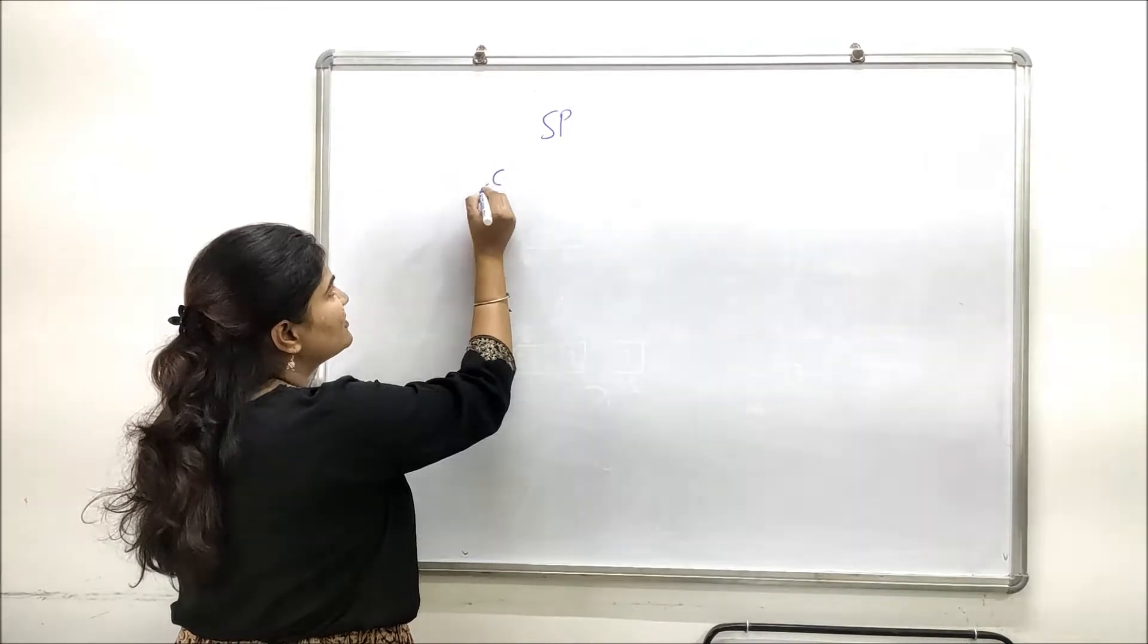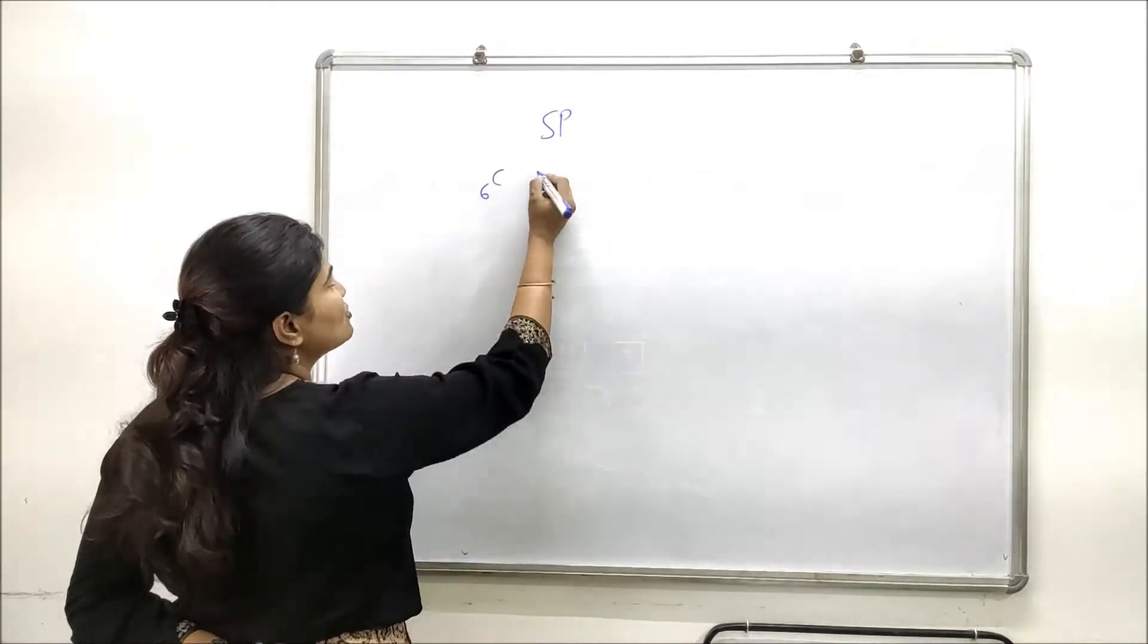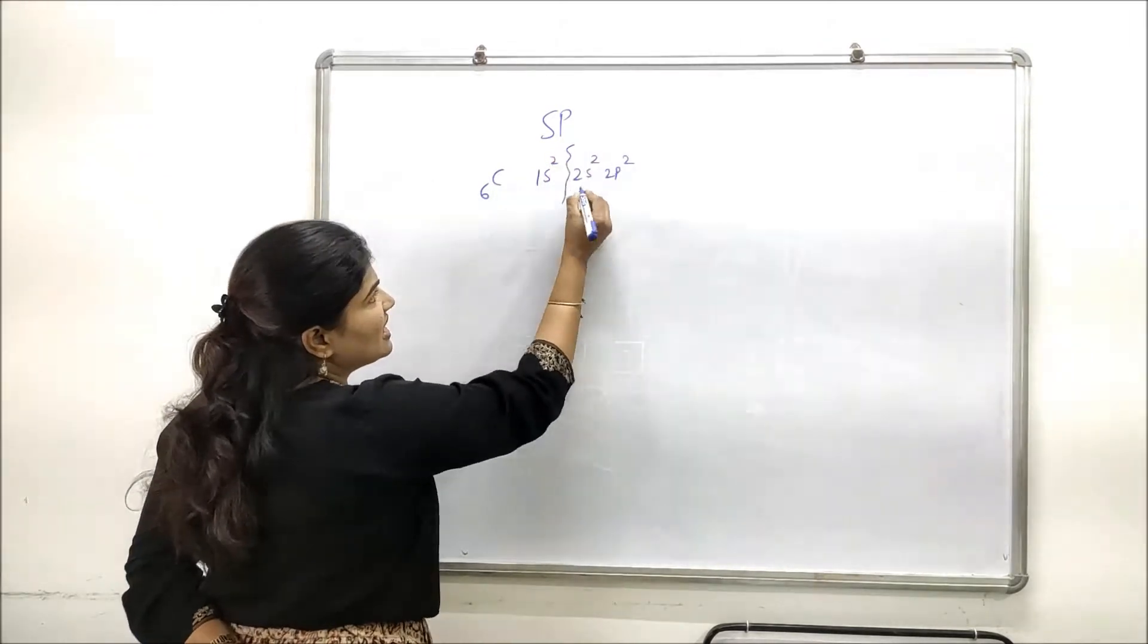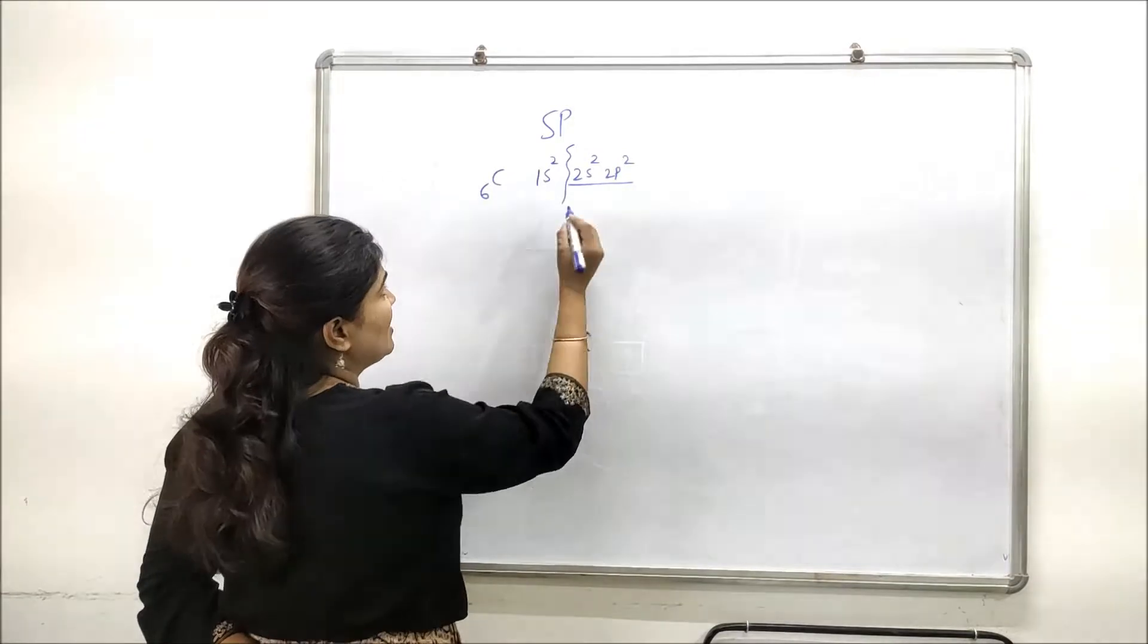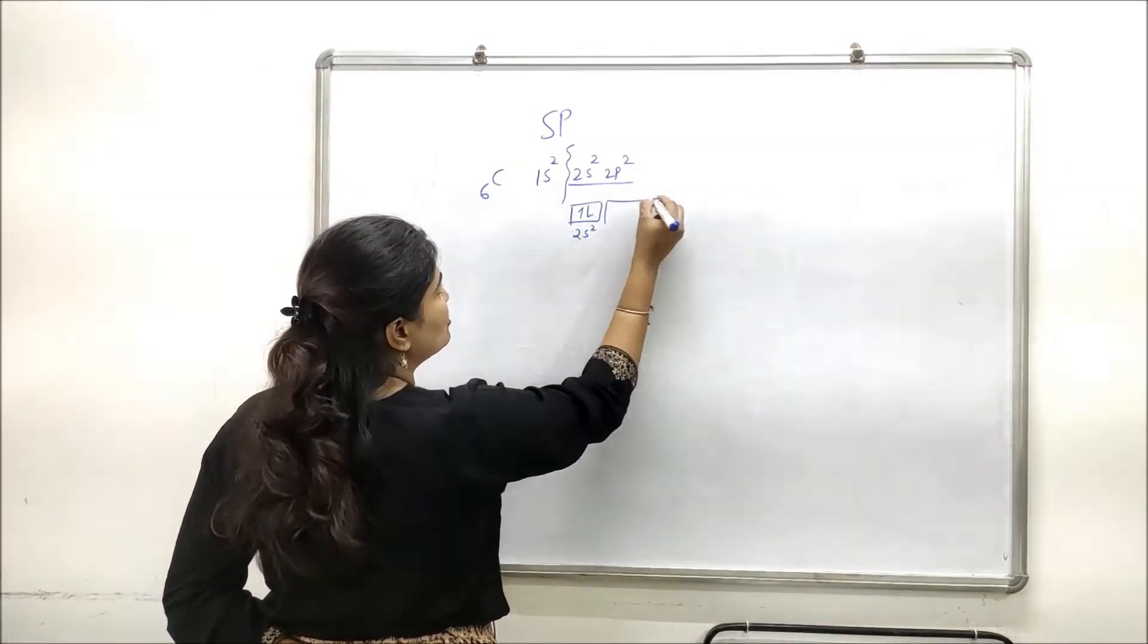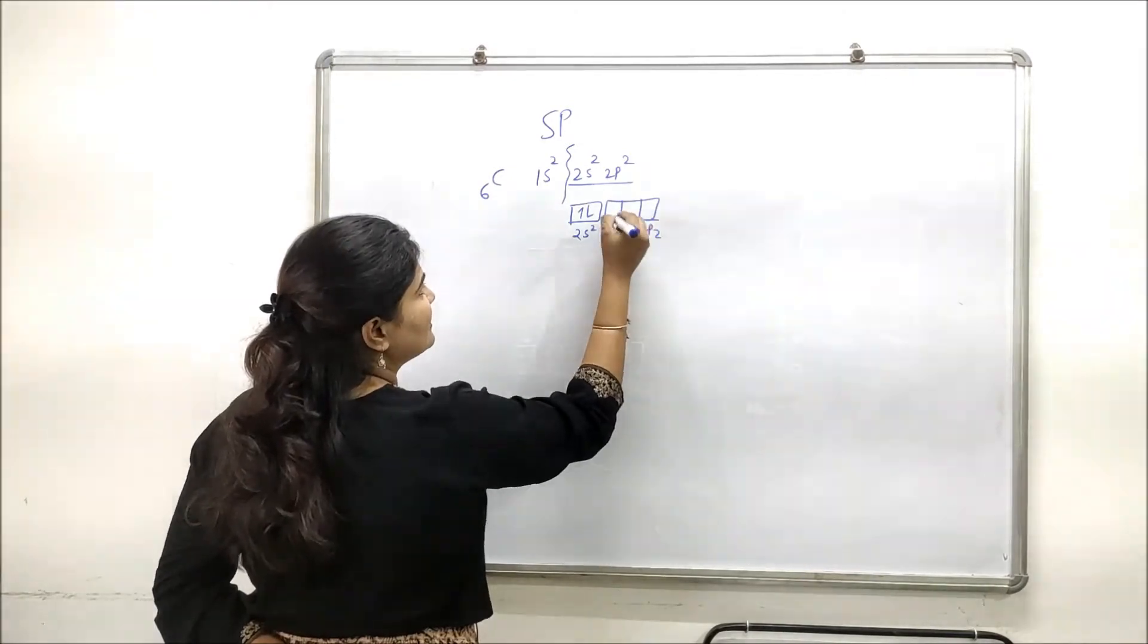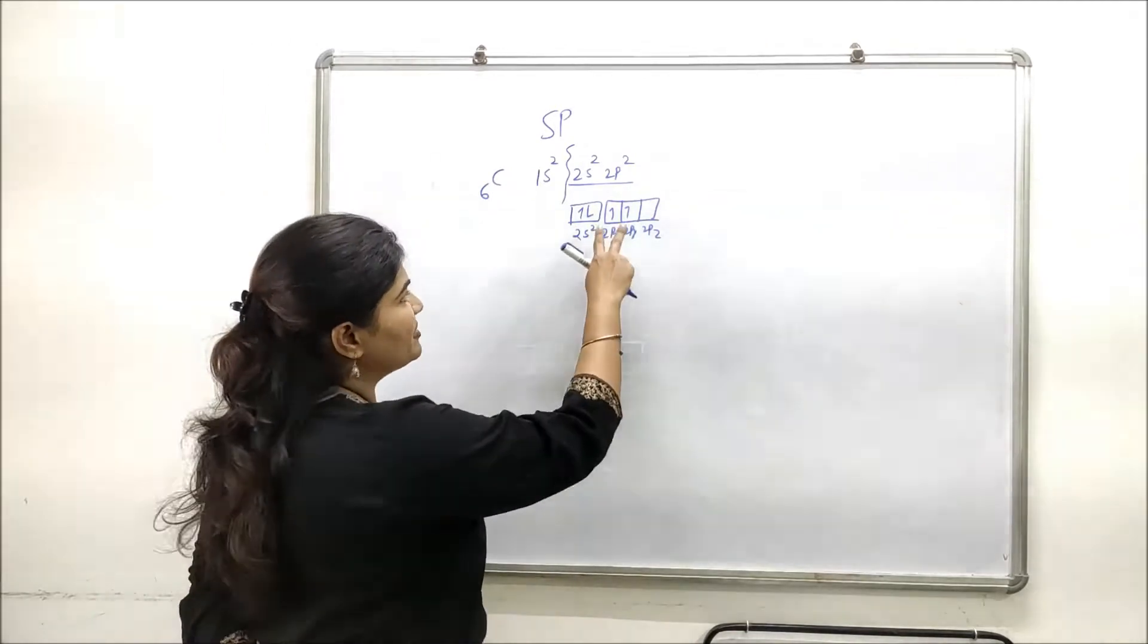Let's start from the ground state configuration of carbon as we always do. Carbon has six electrons, so the configuration will be 1s2, 2s2, and 2p2. This is the outermost shell or valency shell for carbon. If I write it like this, the ground state configuration is 2s2, and in 2p there will be 2px, 2py, and 2pz with two electrons. There are two half-filled orbitals, 2px and 2py, in the ground state configuration of carbon.